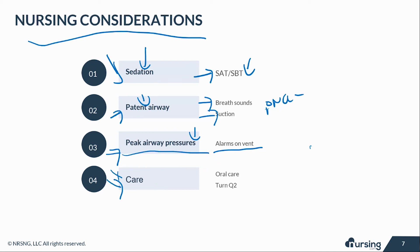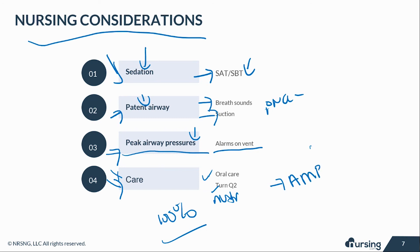As nurses, we provide holistic care. Turn these patients, provide oral care, and take care of all their needs. Address nutrition — if they have an OG tube or PEG tube, make sure feeds are being addressed. One last imperative: always have an Ambu bag at the bedside. In case something happens and the vent stops working, you have to be able to oxygenate that patient. Always have an Ambu bag at bedside.